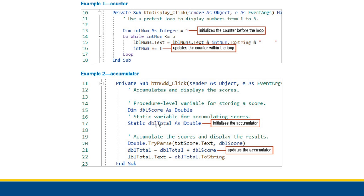Because remember, if a variable is static, it will stay around even after the procedure ends — it still exists, but it can only be used within that procedure. So the second time I call this procedure, this variable will still be around with the value it was holding from the first time I ran it, and so on and so forth. But it's an accumulator because every time we enter a score into the application, it gets added to the total. Right here on line 21, it's getting added using double total equals double total plus double score. So we're updating that accumulator, and because it's static, it stays around as long as the application is running.